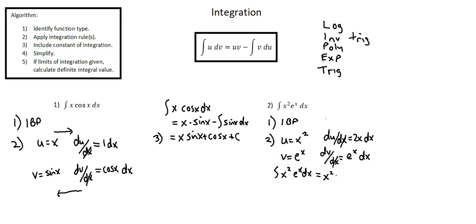That gives us x squared times e to the power of x, minus the integral of v du, where v is e to the power of x and du is 2x dx.